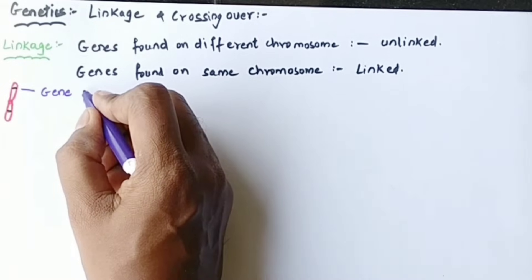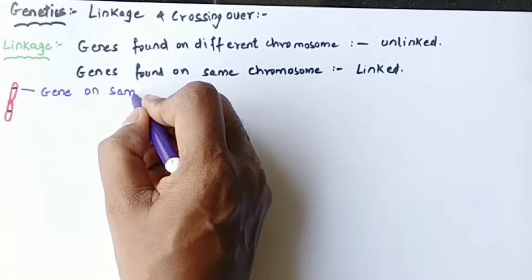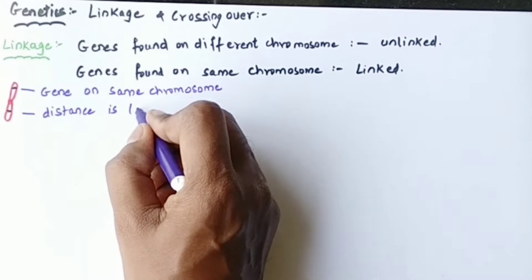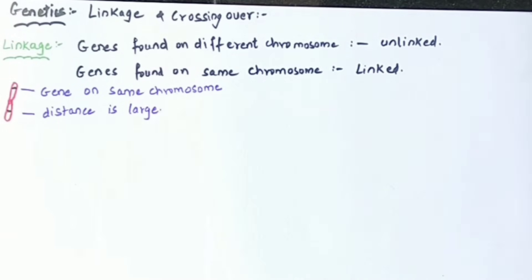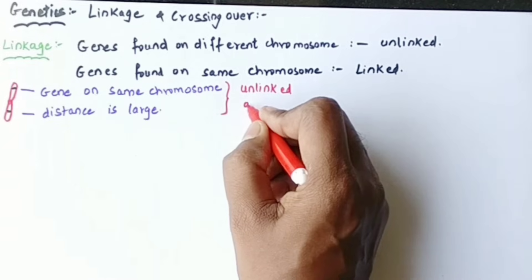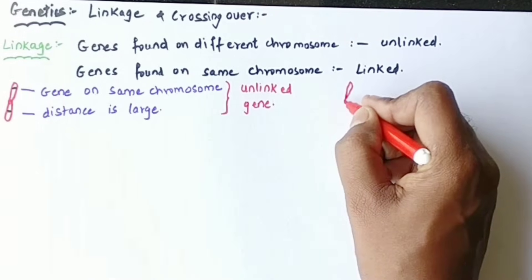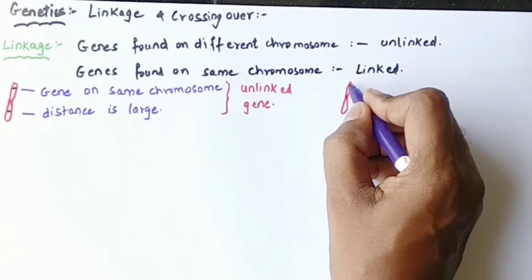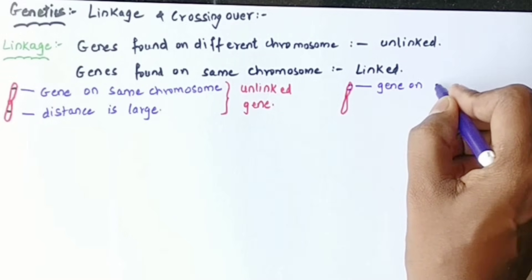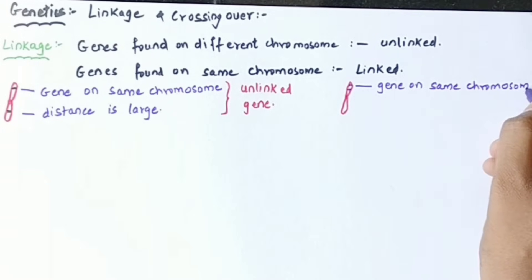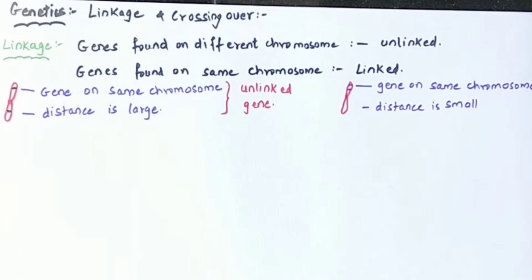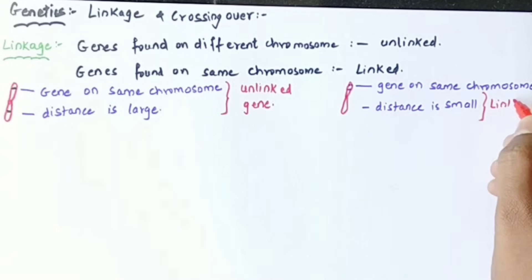Looking at these two genes on the chromosome, when the upper gene and lower gene are far apart, the chance for crossing over is very high, so they are called unlinked or non-linked genes. But when the same two genes are placed very close to each other, there is no chance for crossing over, so genes on the same chromosome with very small distance are called linked genes.